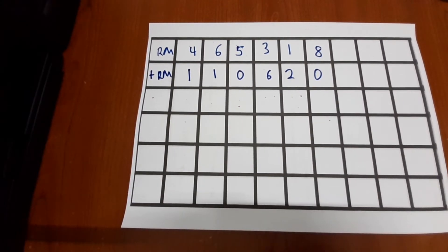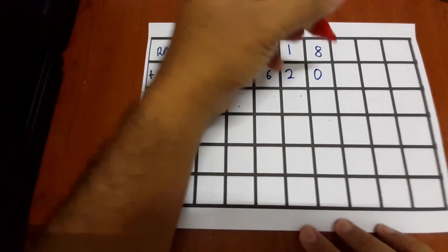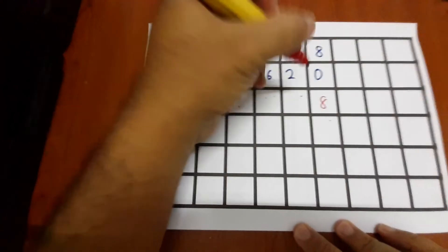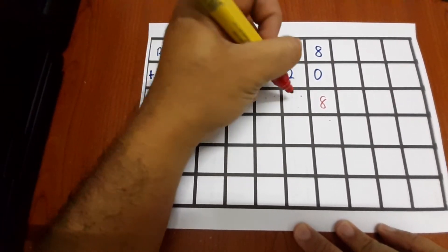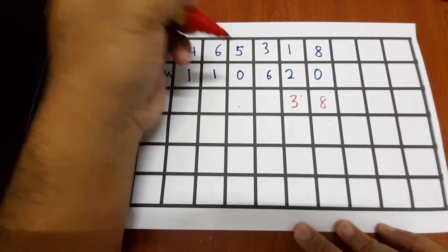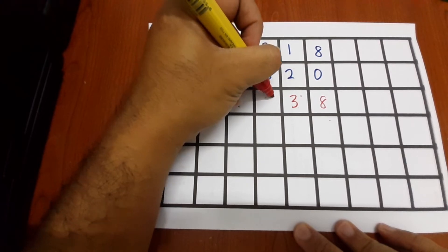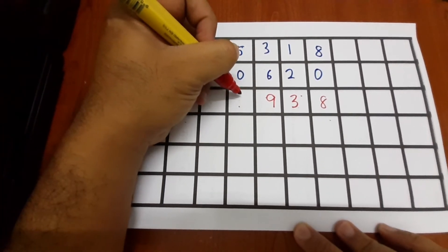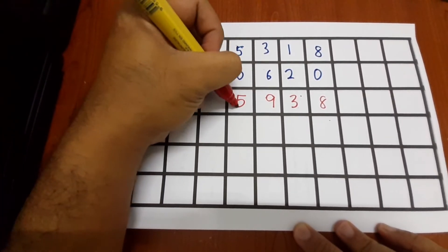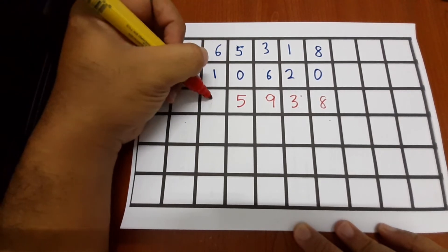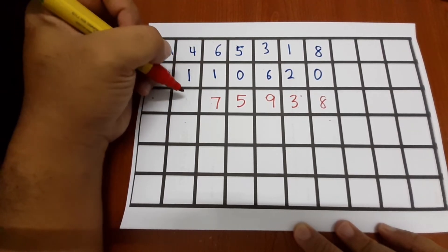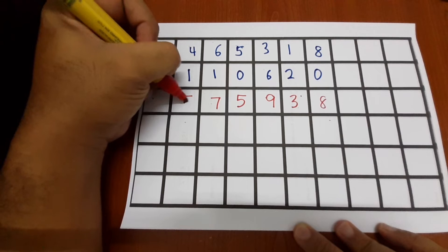Okay, so 8 plus 0 we got 8, 1 plus 2 we got 3, 3 plus 6 we got 9, 5 plus 0 we got 5, 6 plus 1 we got 7, 4 plus 1 we got 5.